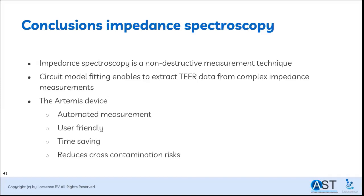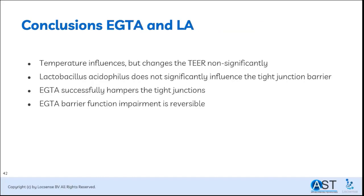Impedance spectroscopy is a non-destructive measurement technique that can qualitatively measure the impedance of the barrier over a broad frequency spectrum. Circuit model fitting is an independent way to extract the TEER. The used Artemis device is an automated, user-friendly and time-saving spectrometer that reduces cross-contamination by using a separate electrode pair for each well. Temperature influences but does not significantly change the TEER, as seen from the control group. LA does not significantly influence the tight junction barrier — no harmful effects, but also no positive effects on its own. EGTA successfully hampers the tight junctions and reduces barrier function to nearly non-existing, and this impairment is reversible, as seen from the significant increase of TEER after EGTA removal.